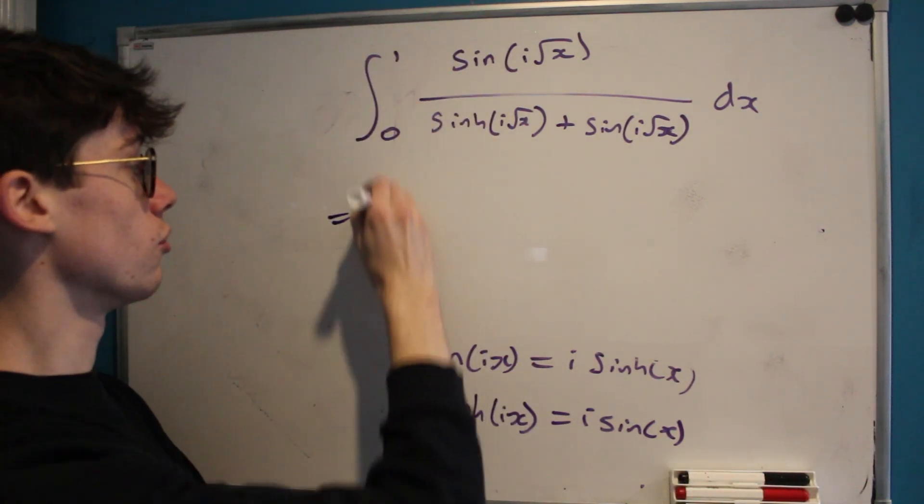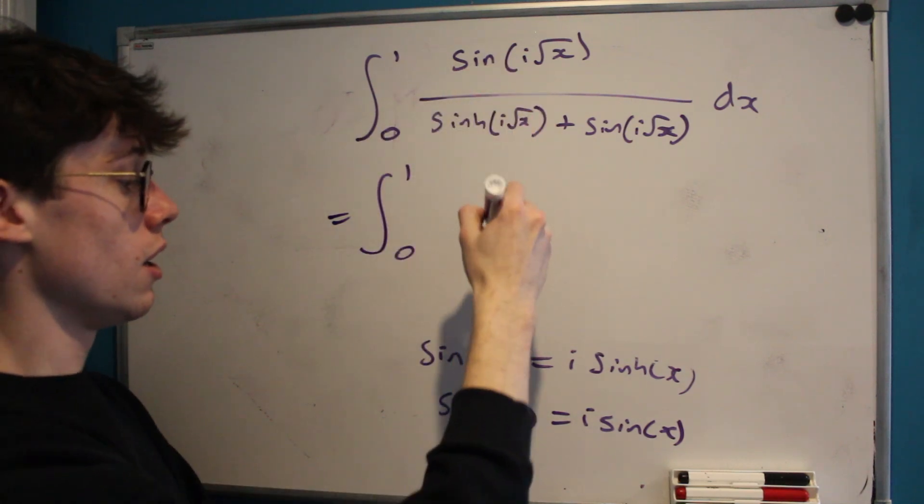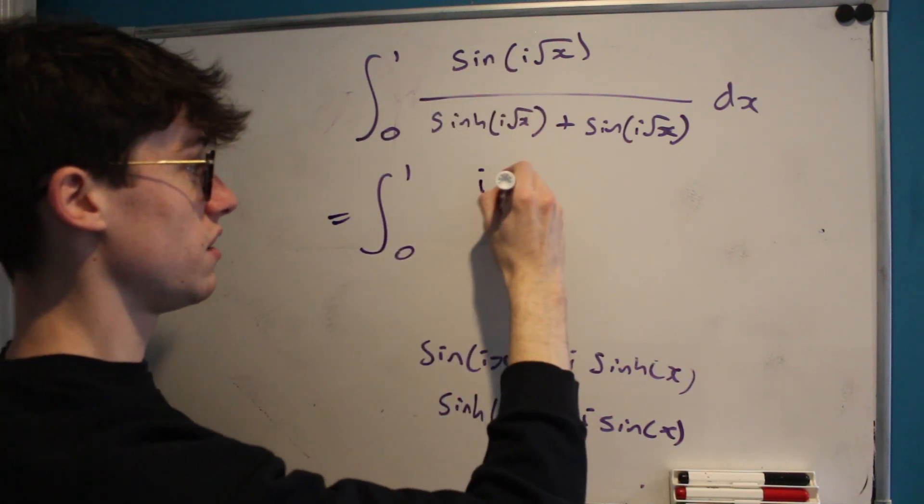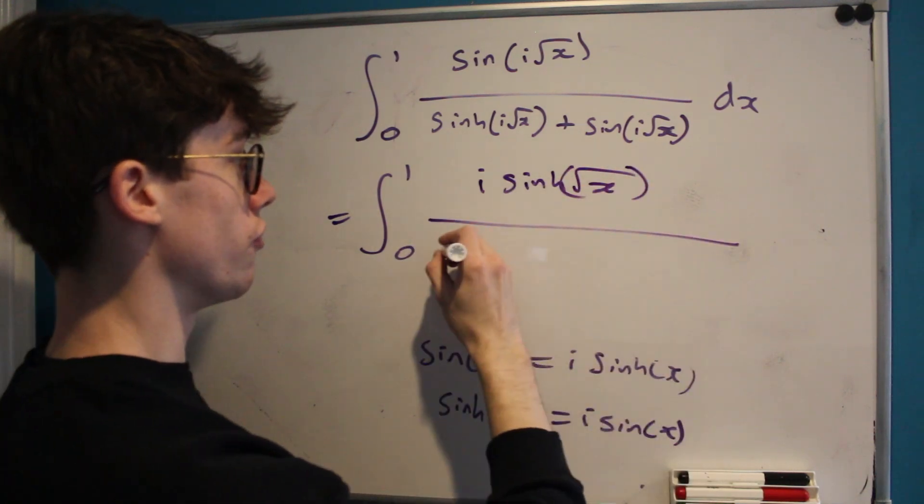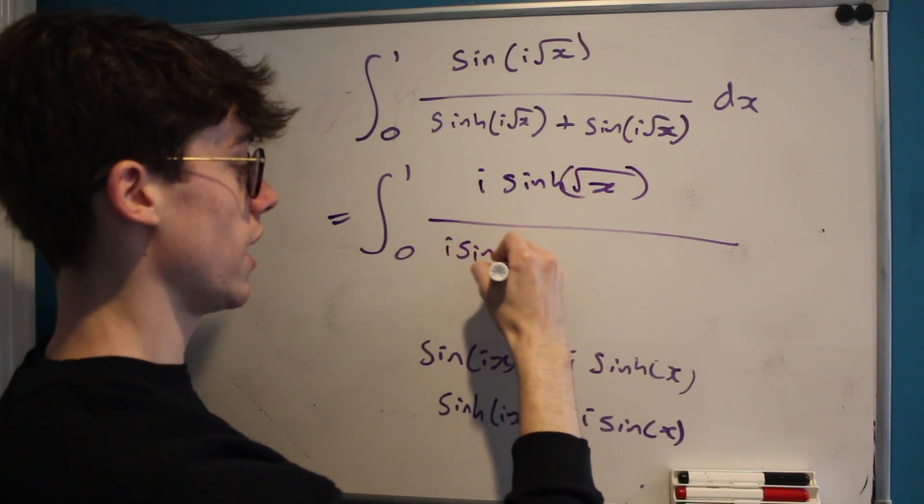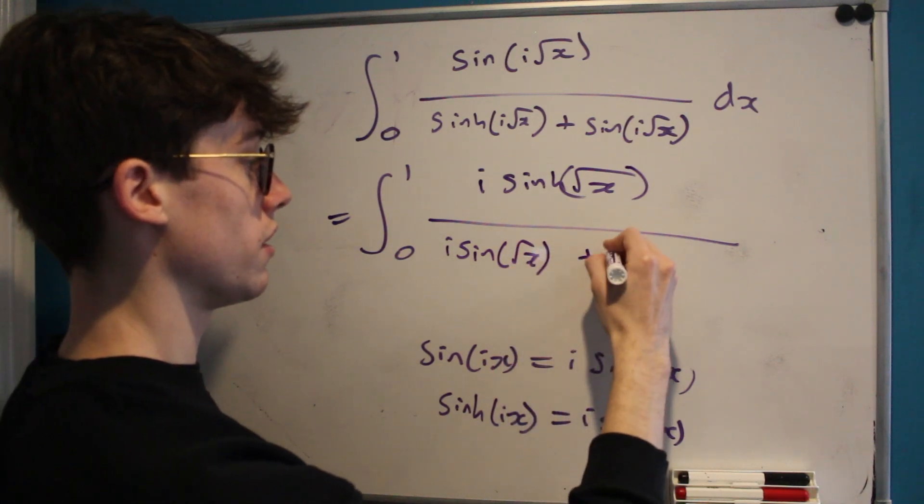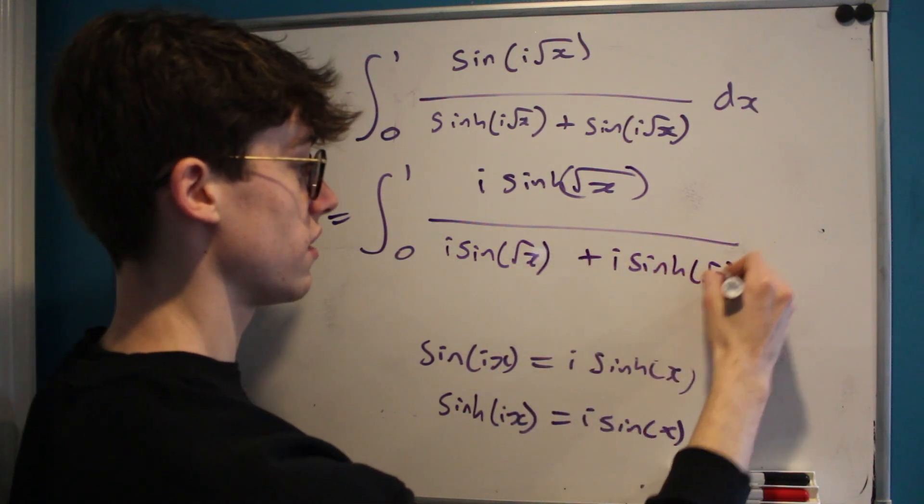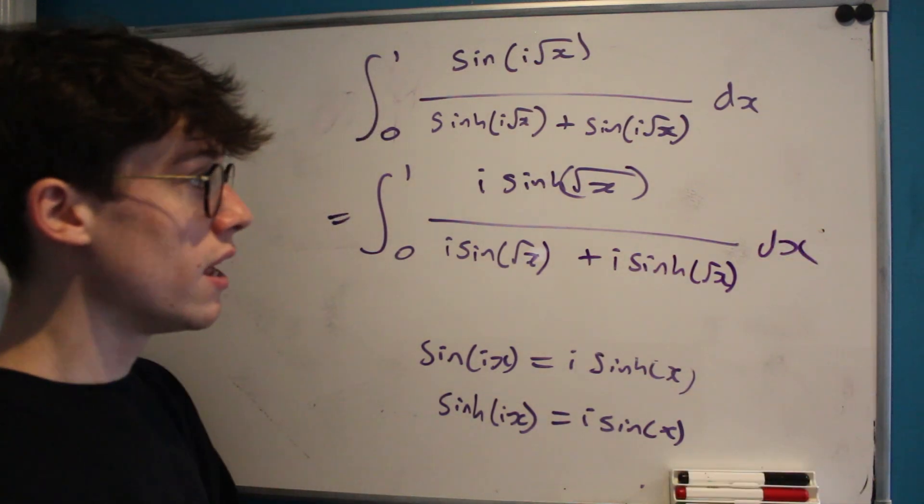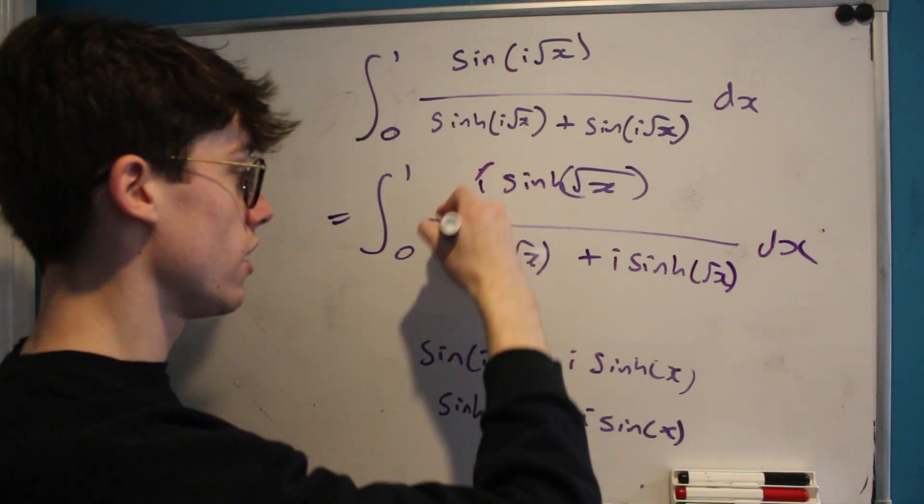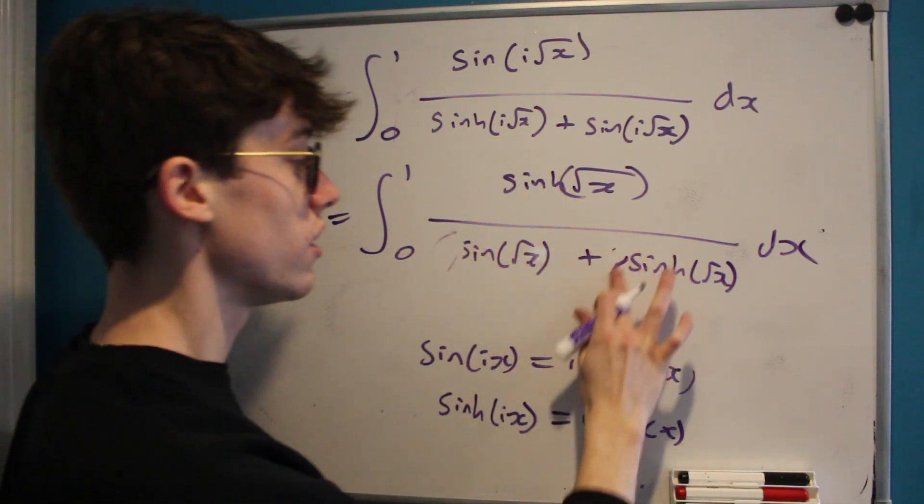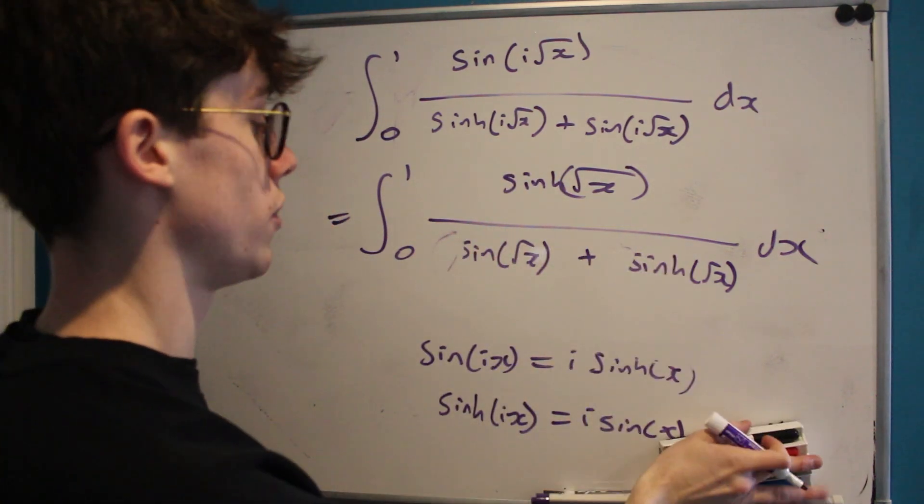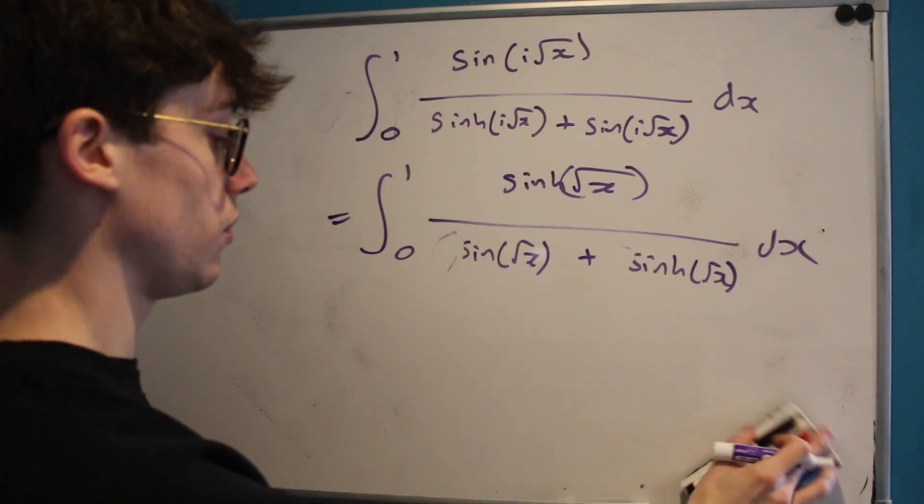So we can rewrite this integral as the integral from zero to one of i sinh root x over i sine root x plus i sinh root x with respect to x, and as if by magic our i's all cancel out. So we've removed the need to worry about this imaginary part of our integral and we're back to dealing with something real. But let's not forget that we've separated this from a larger sum.